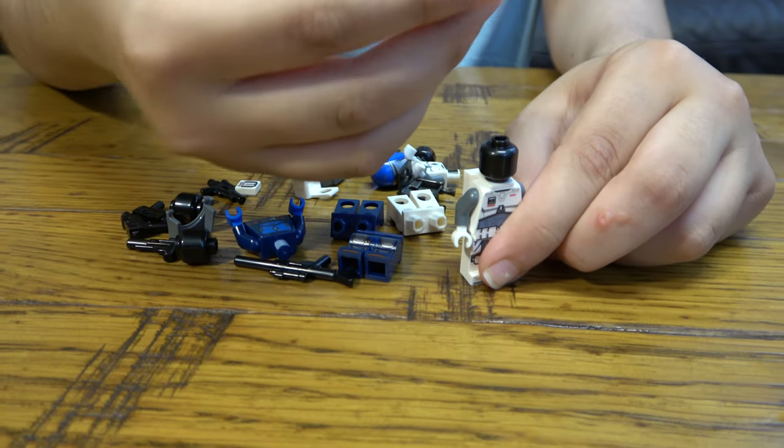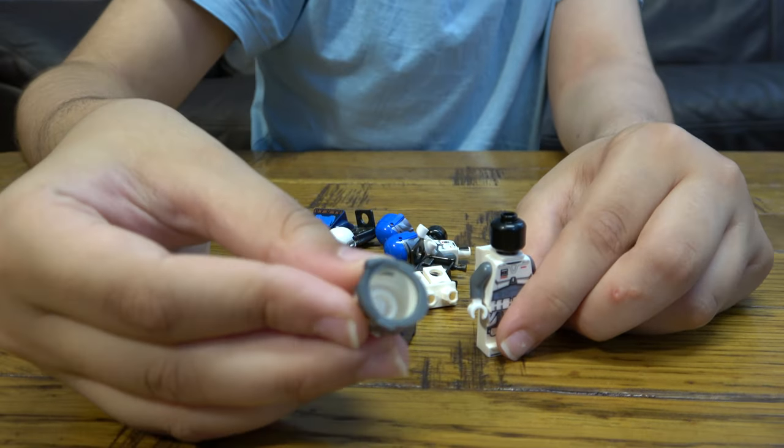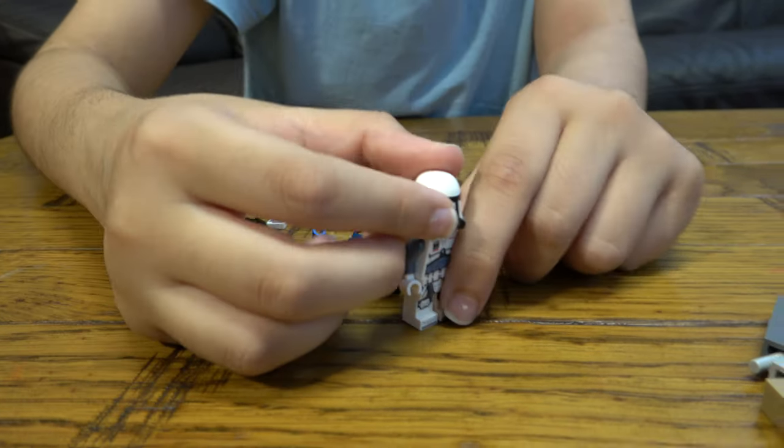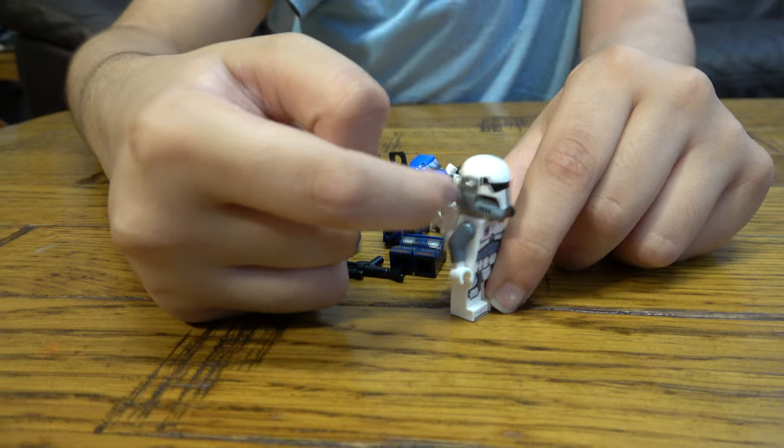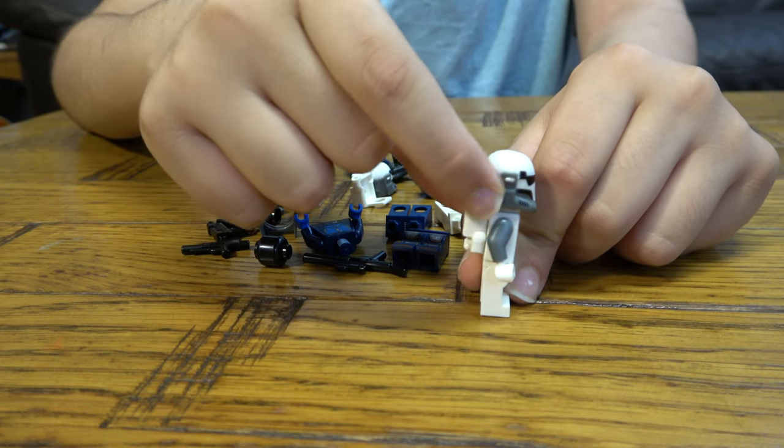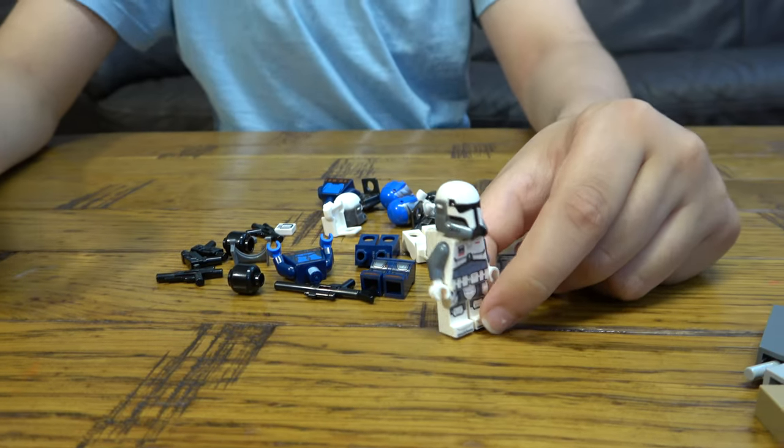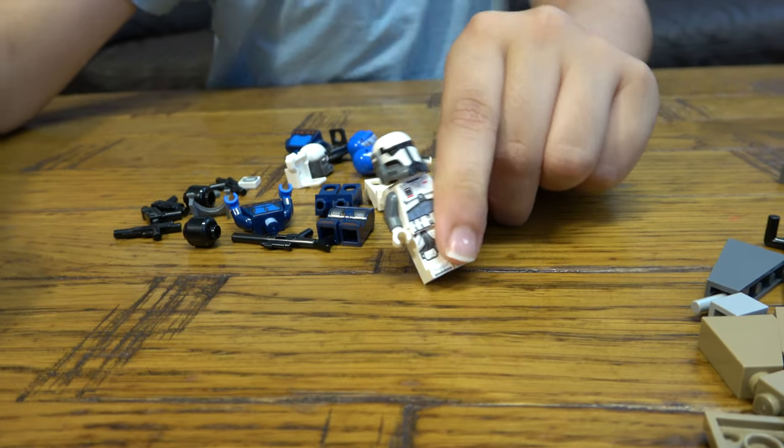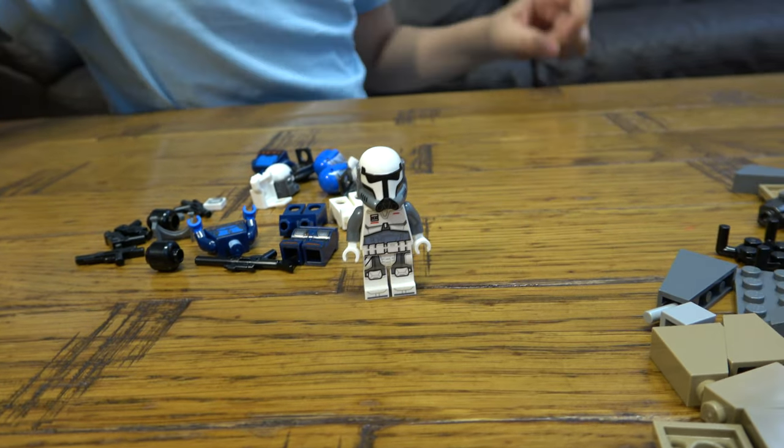As you can see, the helmet is dual molded, which means that LEGO, I appreciate it, because now no matter how hard you scratch it, it won't come off. Because the color of the plastic is gray and white. So it's double molded. But the black here is just printed on, so it will come off.